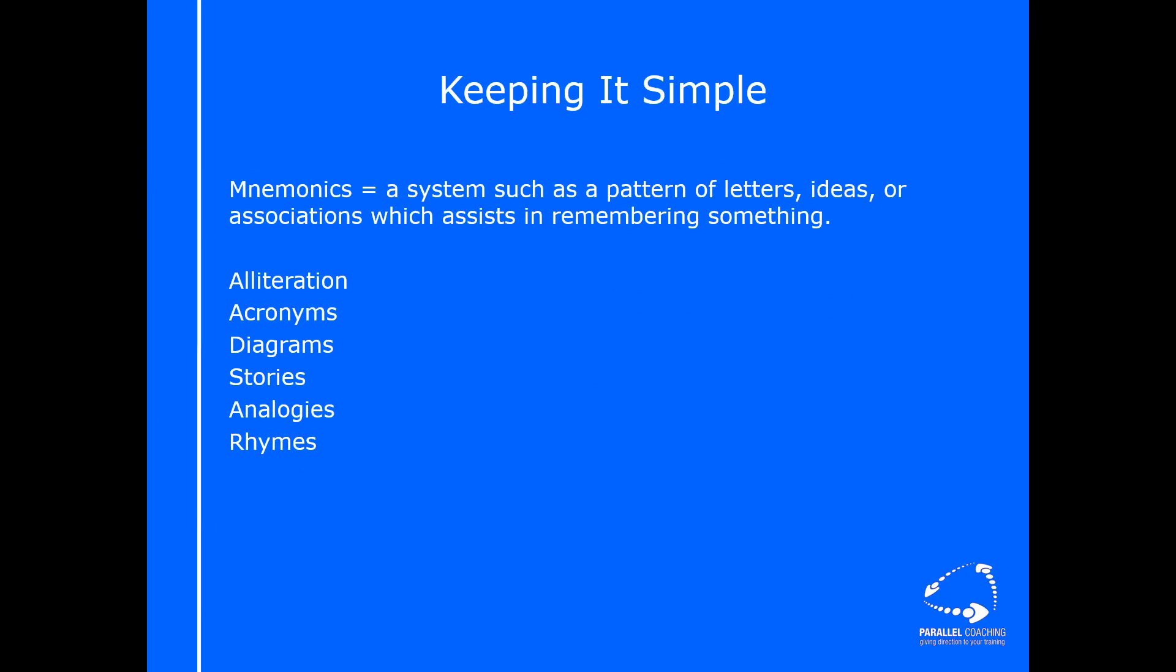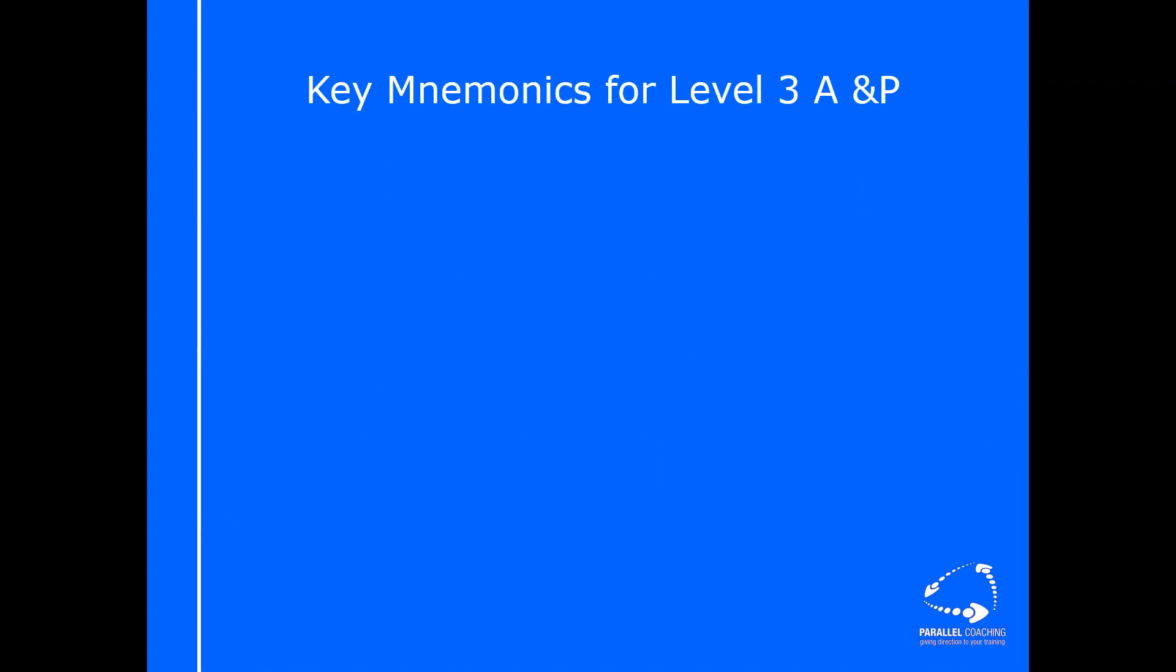So let's look at keeping it simple. Mnemonics are a system such as a pattern of letters or ideas or associations which assist in remembering something. The word mnemonic is a strange word anyway in terms of spelling, but don't be scared by that as a word because it allows you to really understand. We're going to be looking at a few of these here today and relating it to your level three anatomy and physiology. The ones we're going to look at in particular are the process of alliteration, acronyms, diagrams, analogies and rhymes.